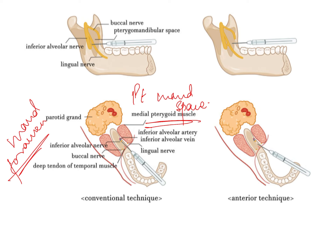You feel the anterior border of the ramus of the mandible with your thumb to identify the deepest notch, and you hold the anterior and posterior borders to get an idea of the width of the mandible. Your needle should be at the center of the anterior-posterior border, and the height is determined by the deepest point on the anterior border of the ramus. This ensures the local anesthetic is deposited at the exact required region within the pterygomandibular space.